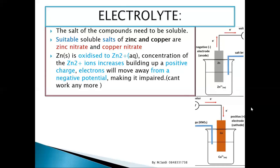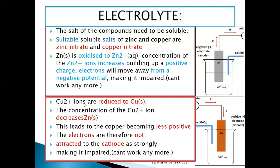The electrons move away from the negative potential terminal and travel to where the copper is. When they arrive at the copper side, the electron flow away from the negative terminal makes it impaired — now we have too much positive charge building up at what is supposed to be a negative terminal. We need something to neutralize this, otherwise the reaction will not continue.